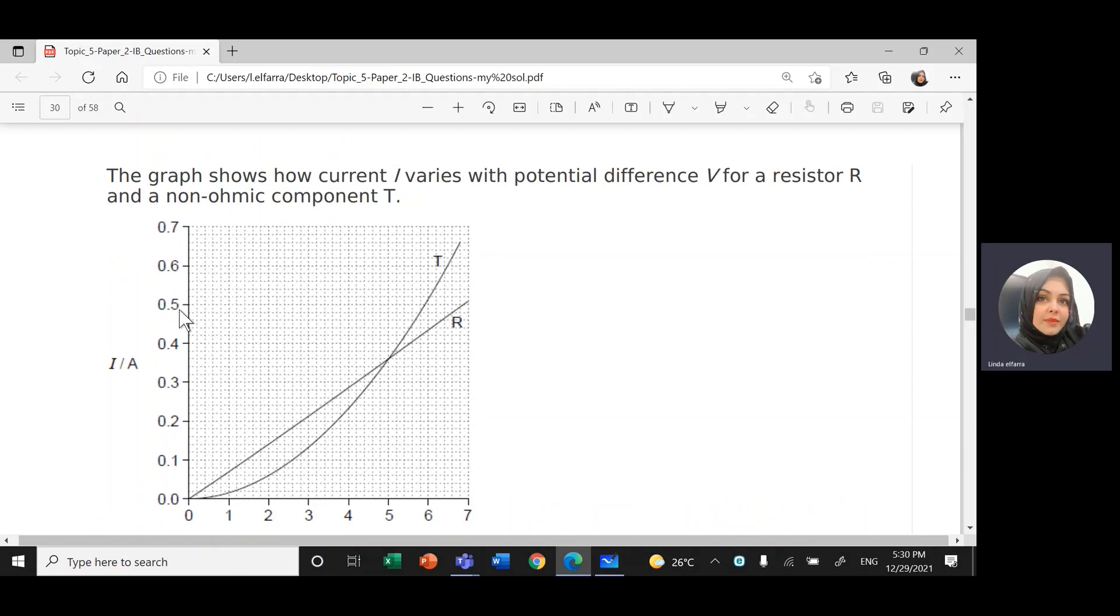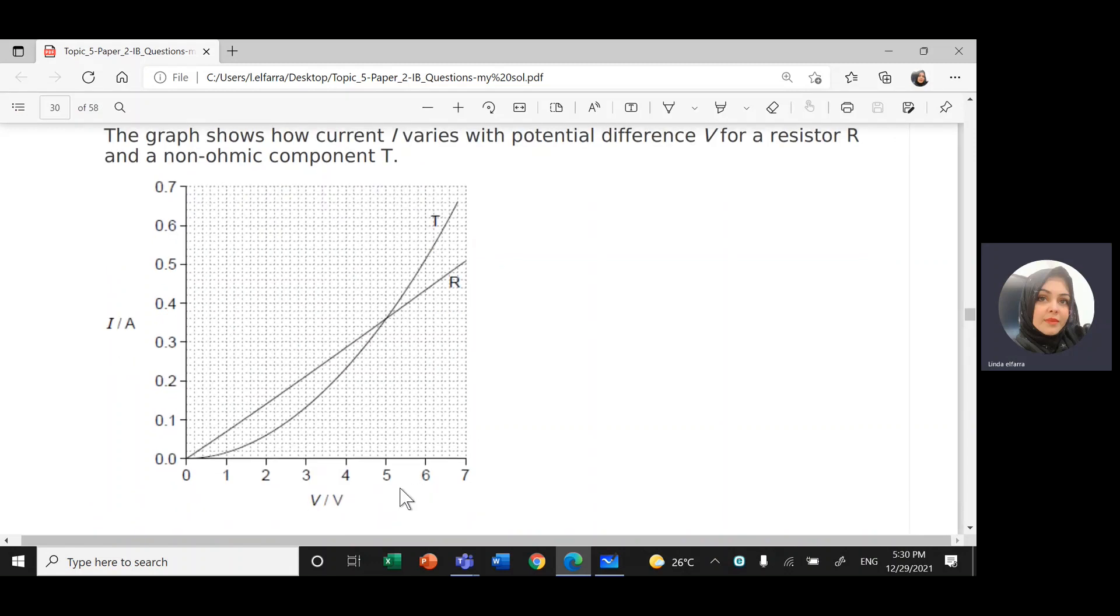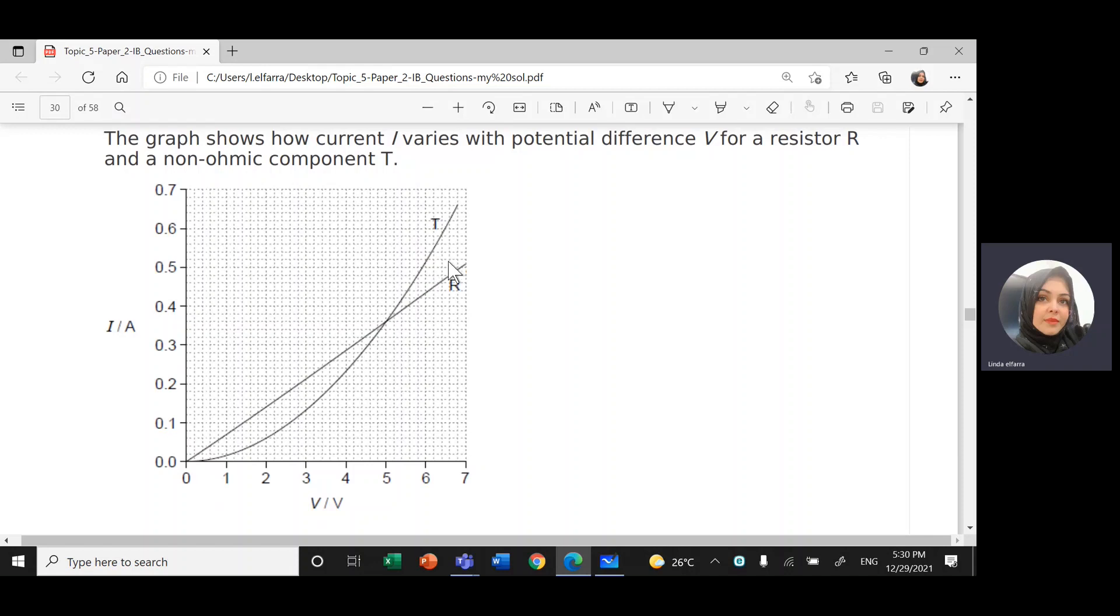Here we have a graph that shows variation between current and voltage for two types of resistance, resistor R and resistor T. As you see, R is a straight line, so R obeys Ohm's law.